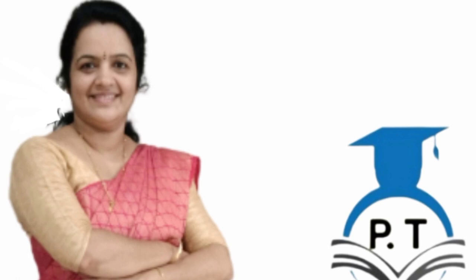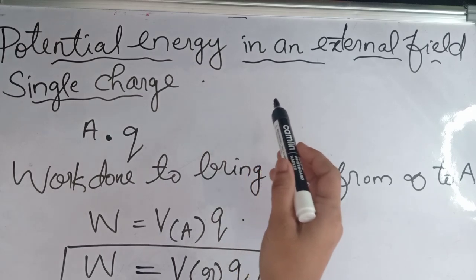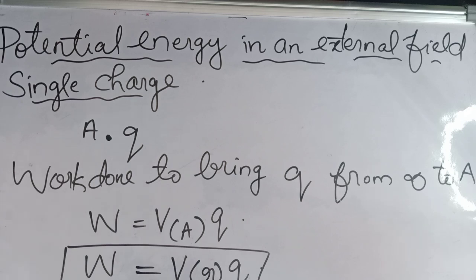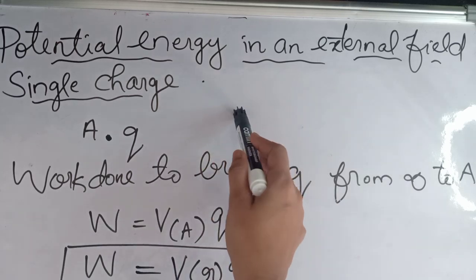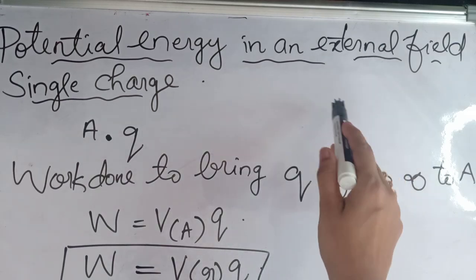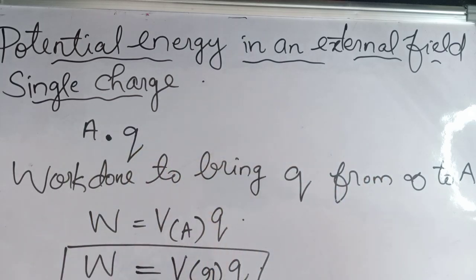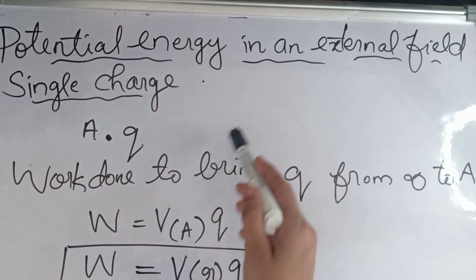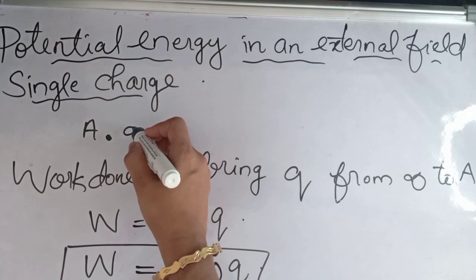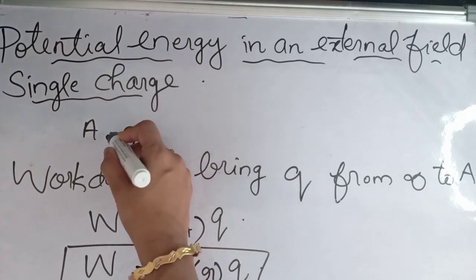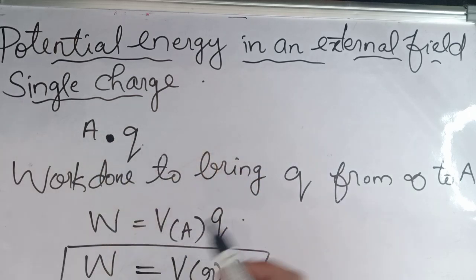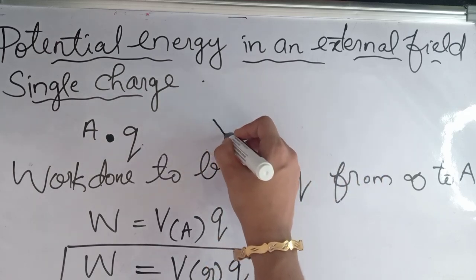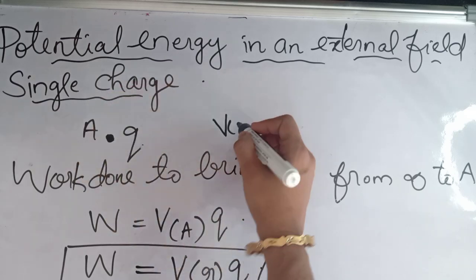We are going to find the potential energy in the case of an external electric field. Last class we discussed how to find the potential energy of a system of charges — single charge, two charges, three charges. But here there is an external electric field, and due to this field the equations will vary. We will consider single charge and two charges only. First, we find the potential energy due to a single charge — a charge +q kept at point A. Because of the external field, there will already be an electric potential at that point, which we can take as V(r).